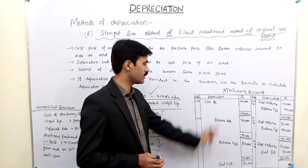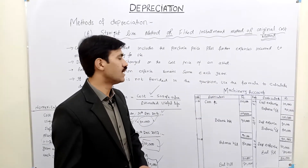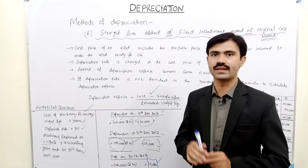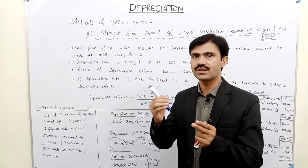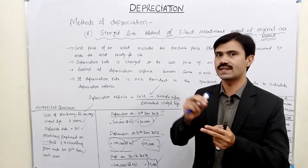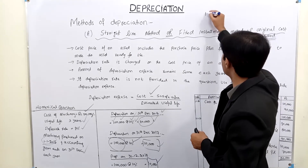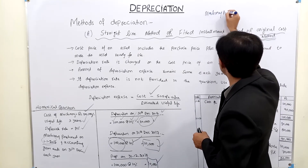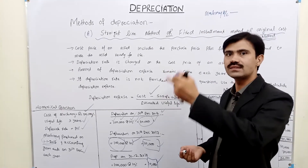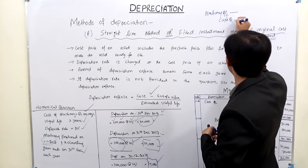Now, if we make the machinery account journal entry: when machinery is purchased, it is an asset increase, so we debit the machinery account. Cash is also an asset, and it decreases, so cash is credited. The journal entry is: Machinery Account debit $100,000, Cash credit $100,000.